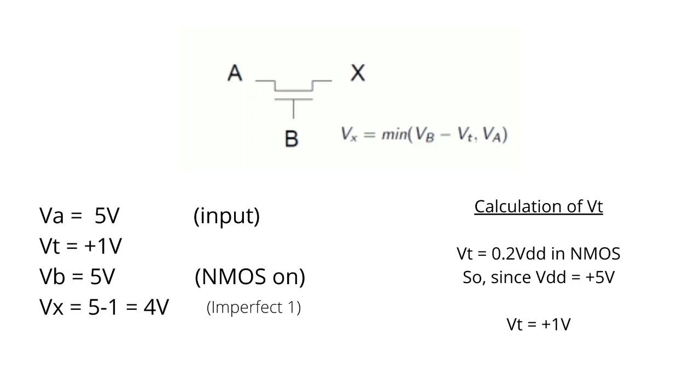So A is where the drain is, X is where the source is, and B is where we are giving the input to the gate. We know that the voltage at X, VX, is equal to min(VB - Vt, VA).